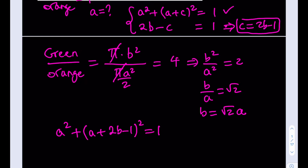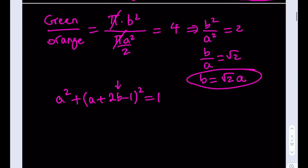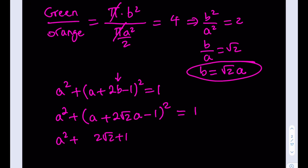Now, this is the breaking point. We're going to replace B with root 2 times A and get an equation in a single variable — make sure to stick till the end because the answer is going to be interesting. After the replacement, we have A squared plus (2 root 2 times A plus A minus 1) squared equals 1, which we can write as A squared plus ((2 root 2 plus 1) times A minus 1) squared equals 1.